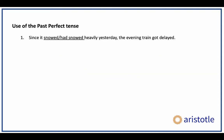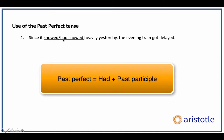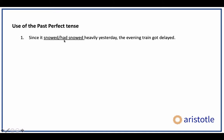Let's look at that one. Here is a sentence: 'Since it snored / had snored heavily yesterday, the evening train got delayed.' Snored is simple past tense; when you add 'had,' it becomes past perfect. So do you want to go with simple past 'snored' or past perfect 'had snored'? Pause the video, give it some thought, and come back.